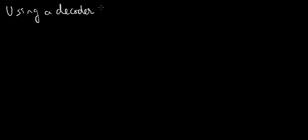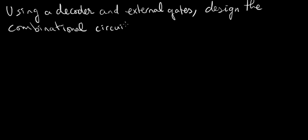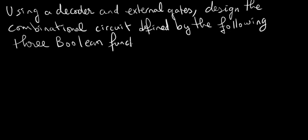So, using a decoder and external gates, design the combinational circuit defined by the following three Boolean functions. This time we're working with a decoder and three Boolean functions. The three Boolean functions are as follows.